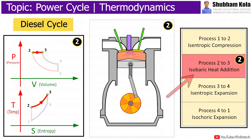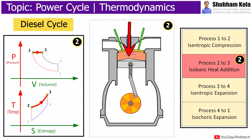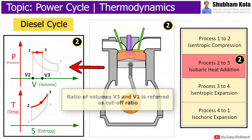Process 2 to 3 is an isobaric heat addition process, where heat is added to the system externally by combusting the air-fuel mixture at constant pressure. The ratio of volumes V3 and V2 is referred to as the cut-off ratio.